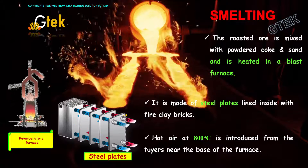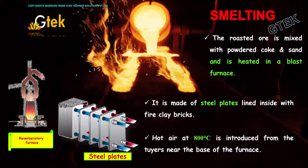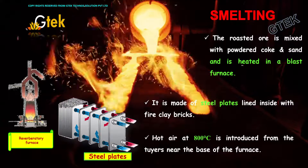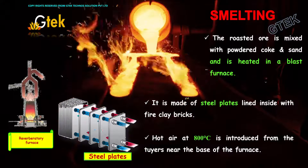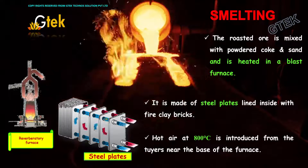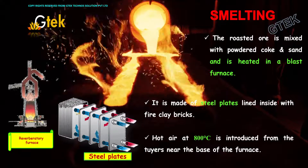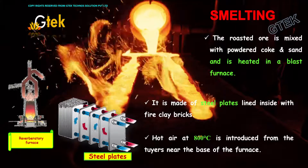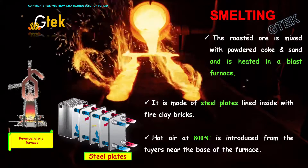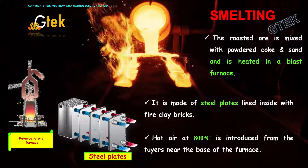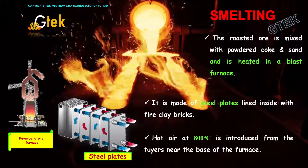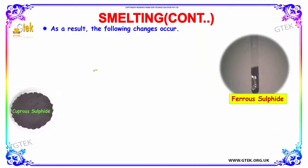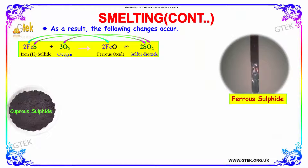The next process is smelting. The roasted ore is mixed with powdered coke and sand and heated in a blast furnace made of steel plates lined inside with fire clay bricks. Hot air at 800 degrees Celsius is introduced from tuyeres near the base of the furnace. As a result, the following changes occur.